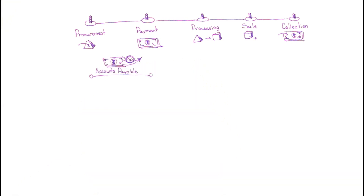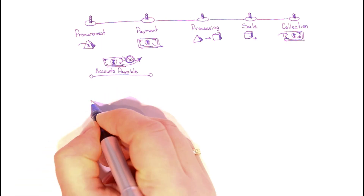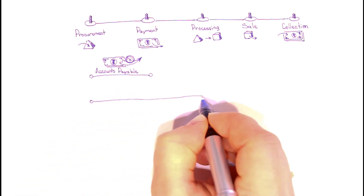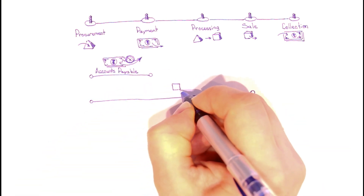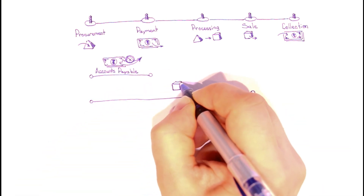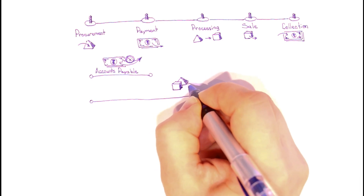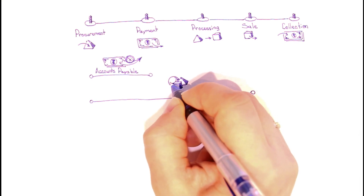After purchasing, materials move to the processing stage. Finished goods passage to the warehouse and get delivered to the clients. We can see that the company carries inventory in different forms from the procurement until the sales stage.